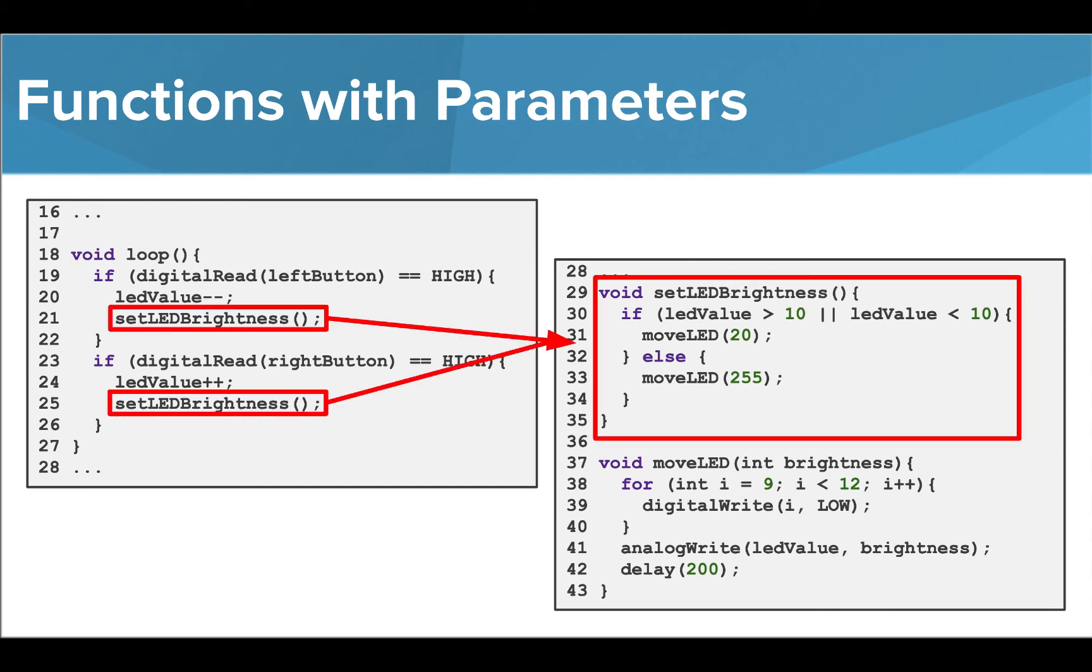When a button is pressed, we are first calling the setLEDBrightness function. You'll see that this function does not take any parameters, but uses the LED variable to call the setLEDBrightness function using different values as arguments.